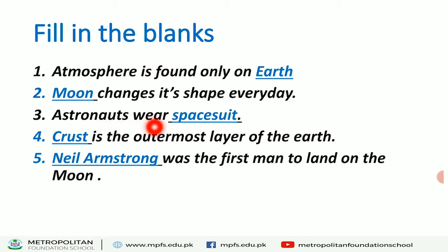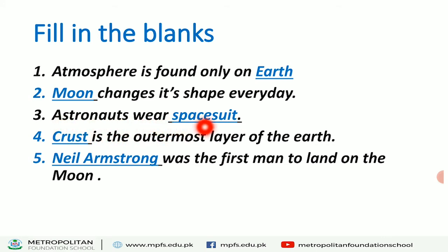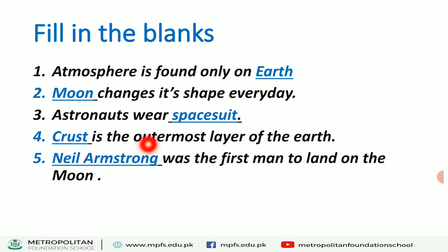Second blank: 'Dash changes its shape everyday.' Which thing changes its shape every day? Yes — Moon. The Moon is sometimes a crescent, sometimes a half moon, sometimes a full moon. So the Moon changes its shape. Not Earth, not the Sun — the Moon changes.